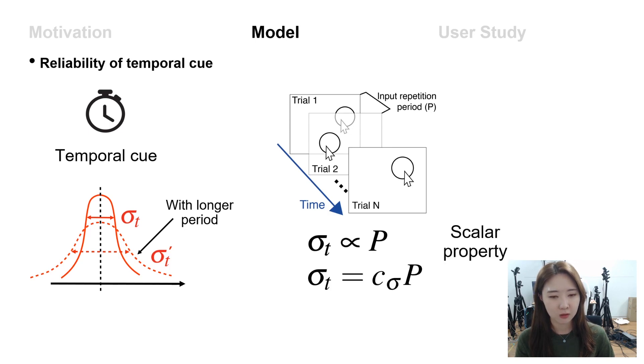This is called the scalar property of the human internal clock. So we can say that the standard deviation of the estimated timing from the temporal cue increases in proportion to the period. The C sigma is a proportionality constant and it is a user-dependent parameter.